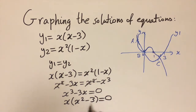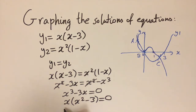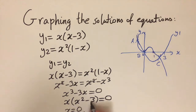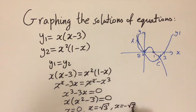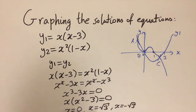We solve by setting each factor equal to zero. From x equals zero, and from x squared minus 3 equals zero we get x equals the square root of 3 and x equals minus the square root of 3. So we have three solutions, which is consistent with our sketch.